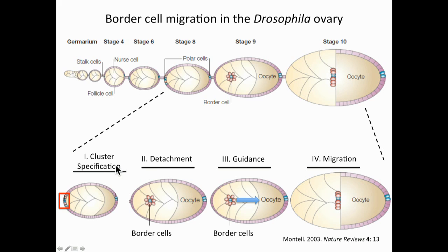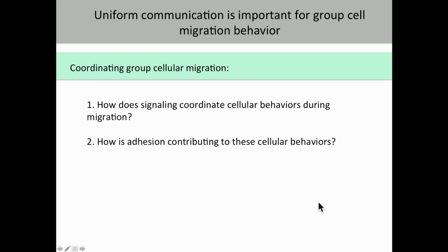I'm showing you the stages of border cell migration. In order for the border cells to migrate, a subset of cells within the epithelium of the egg chamber have to be specified as border cells. Once specified, these cells form a cluster, which collectively detaches from the epithelium and migrates posteriorly. The border cells are guided by guidance cues from the oocyte and complete their migration when they reach the border of the oocyte. The border cells have to coordinate their behavior, and I'm interested in understanding how that coordination happens.